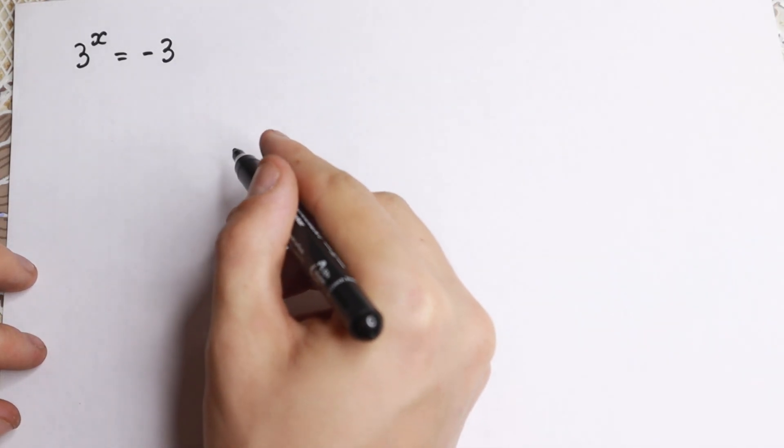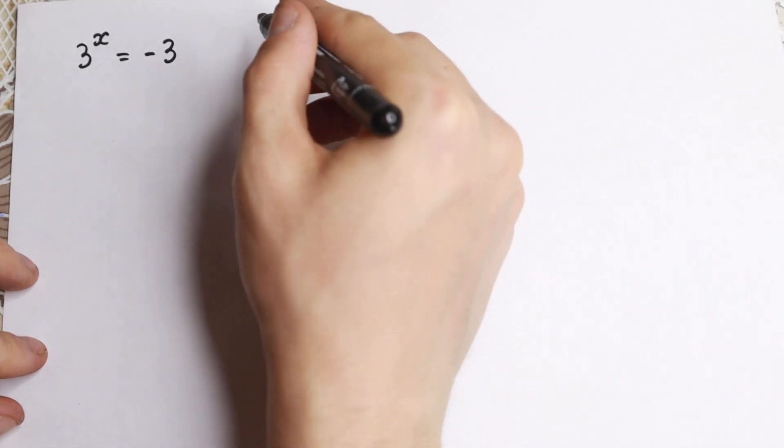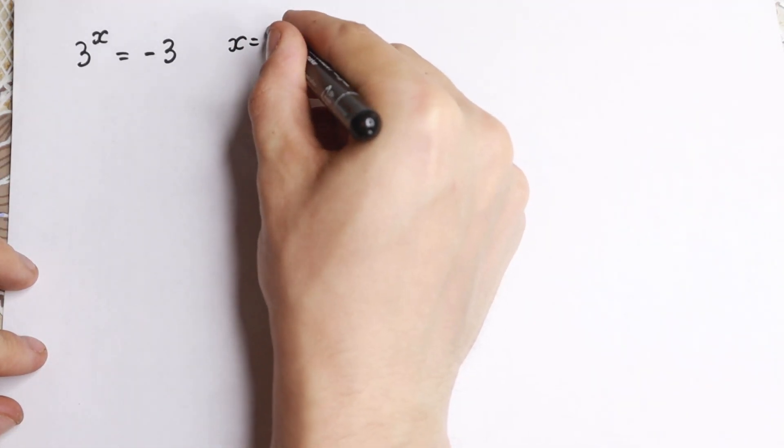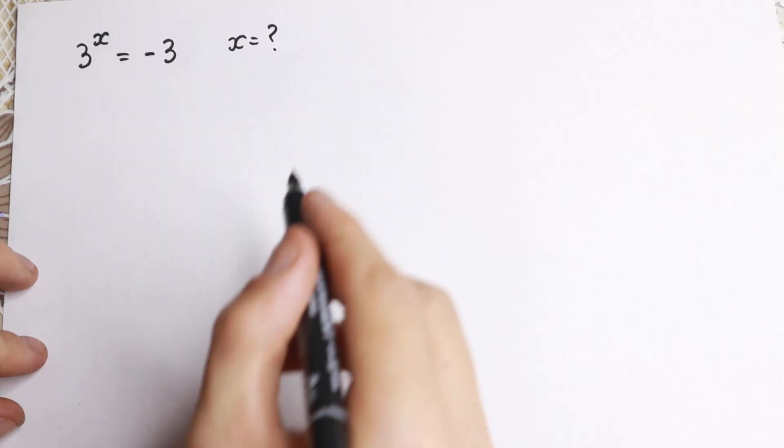We have 3 to the x equal to minus 3, and we need to find x in this equation.